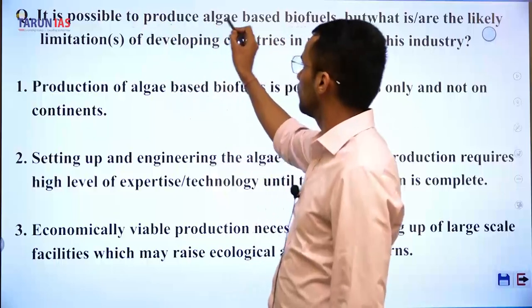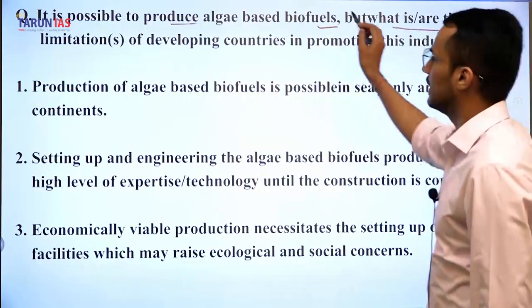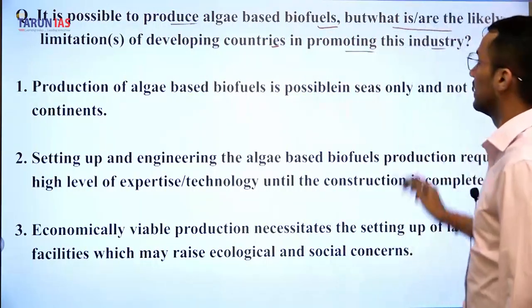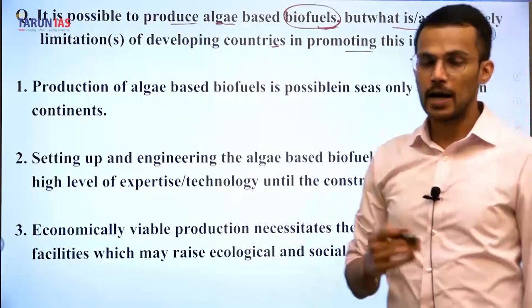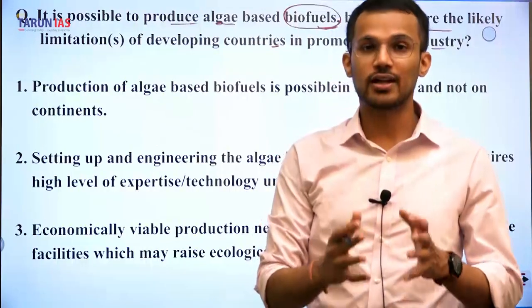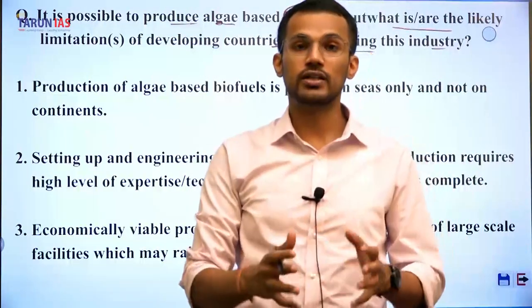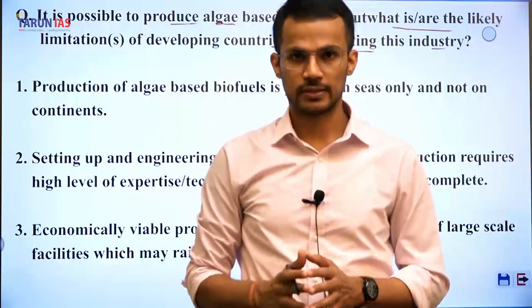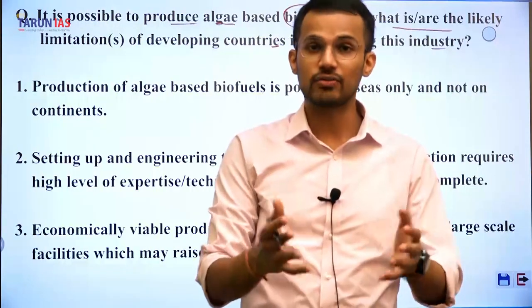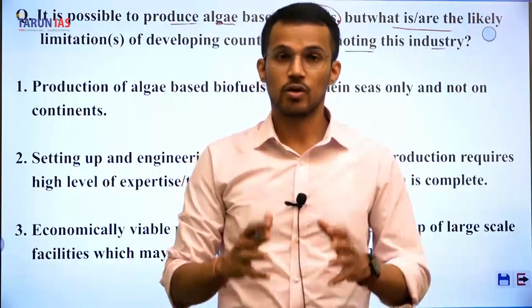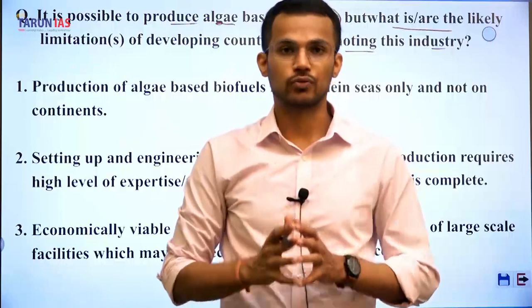Next 2017 question: is it possible to produce algae-based biofuel, and what are the likely limitations for developing countries? Biofuels are generated from plant-based materials; traditionally Jatropha was used, but the 2018 National Biofuel Policy expanded this to include rotten potatoes, broken grains, sugar beet, and algae. The question asks about limitations for developing countries in promoting the algae-based biofuel industry.